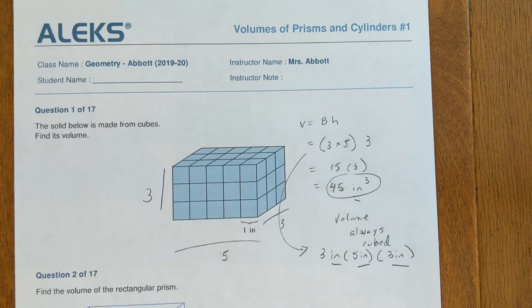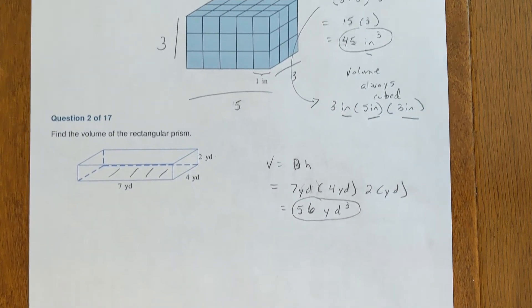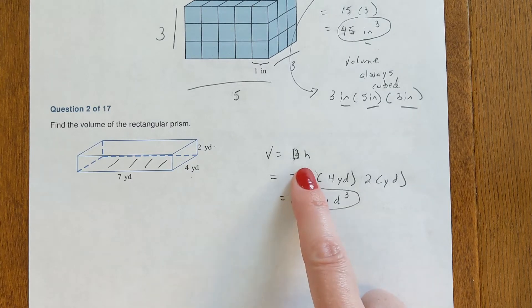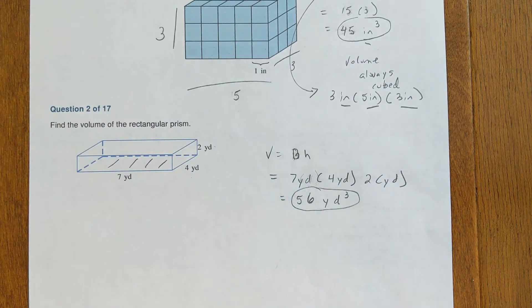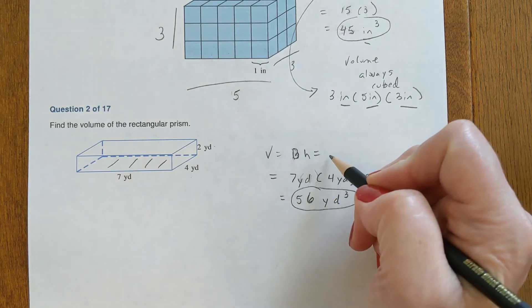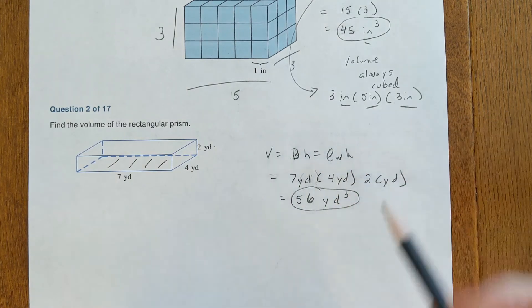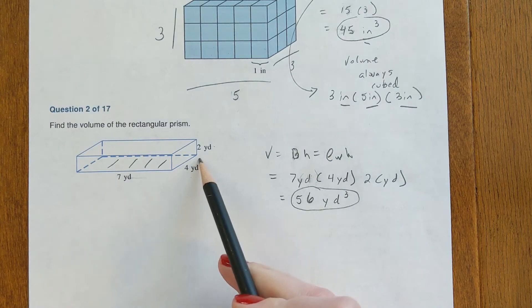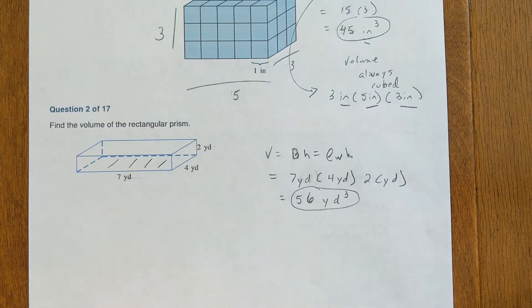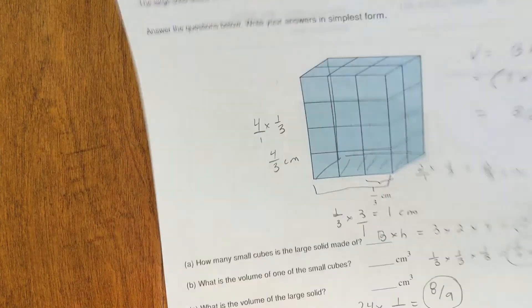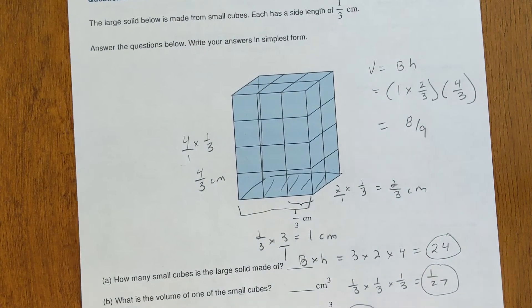On the next one we have another rectangular prism, so I'm going to use that same formula again: area of the base times the height. The base is a rectangle, and the area of a rectangle is length times width, so the length is seven times the width four times the height of two, which is 56 yards cubed.